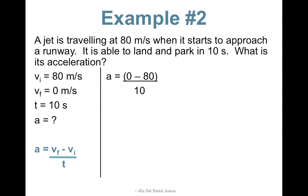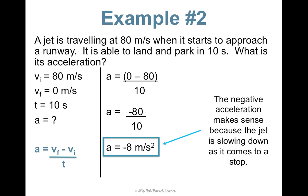It's the same equation, but your VF is 0, minus your VI, which is 80, divided by 10. Well, 0 minus 80 is negative 80, and that is okay. Negative 80 divided by 10 gives me negative 8. And again, it's meters per second squared, because my velocity unit was meters per second. Now, this negative acceleration makes sense, because the jet is slowing down when it comes to a stop.